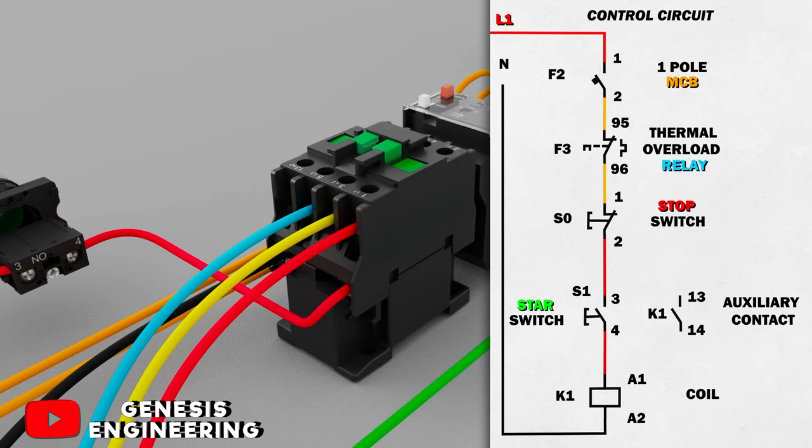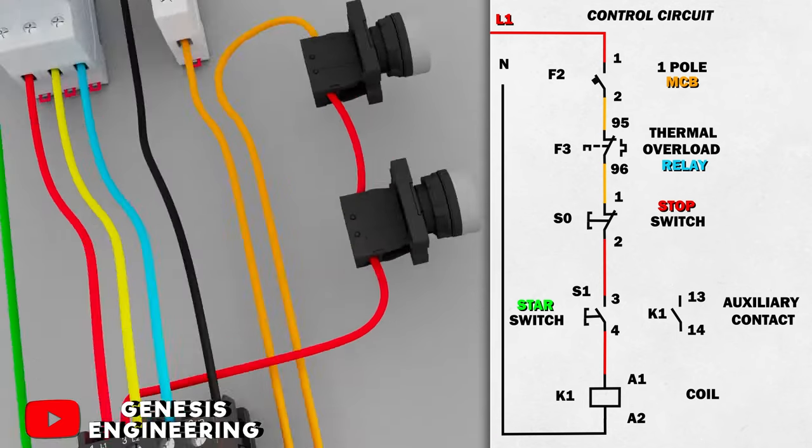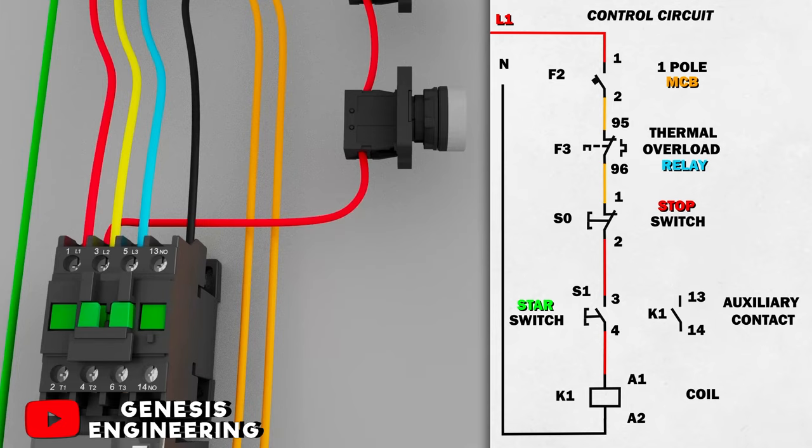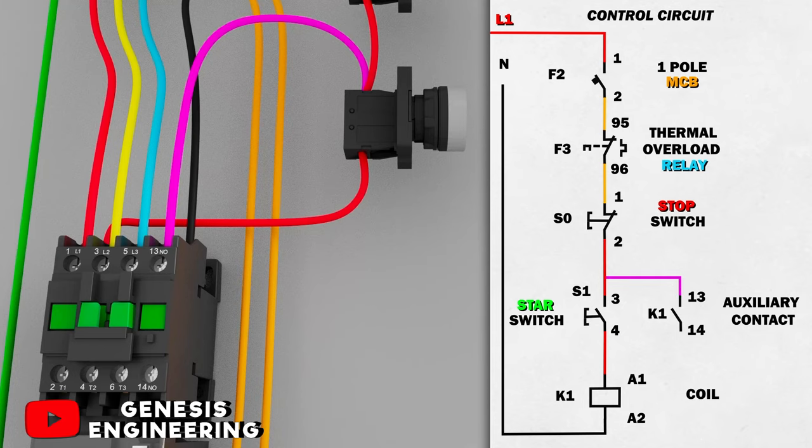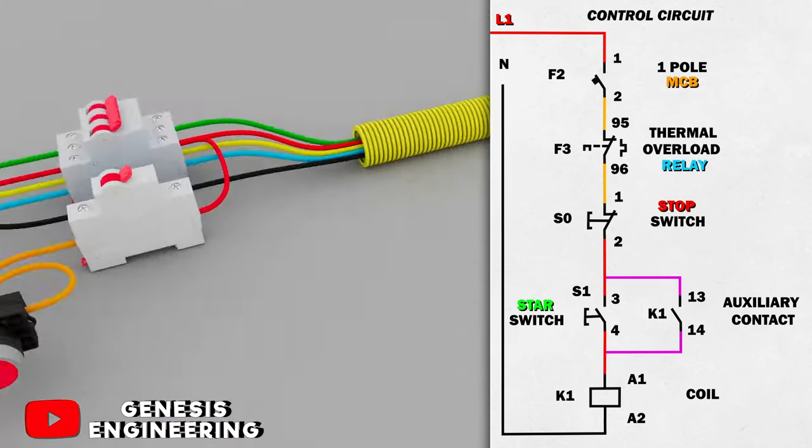Now we are going to make the holding contact. That is, we are going to connect auxiliary contact 13 and 14 of the contactor in parallel with the green button. Terminal 3 of the green button connected with terminal 13 of the contactor and terminal 4 of the button with terminal 14 of the contactor.